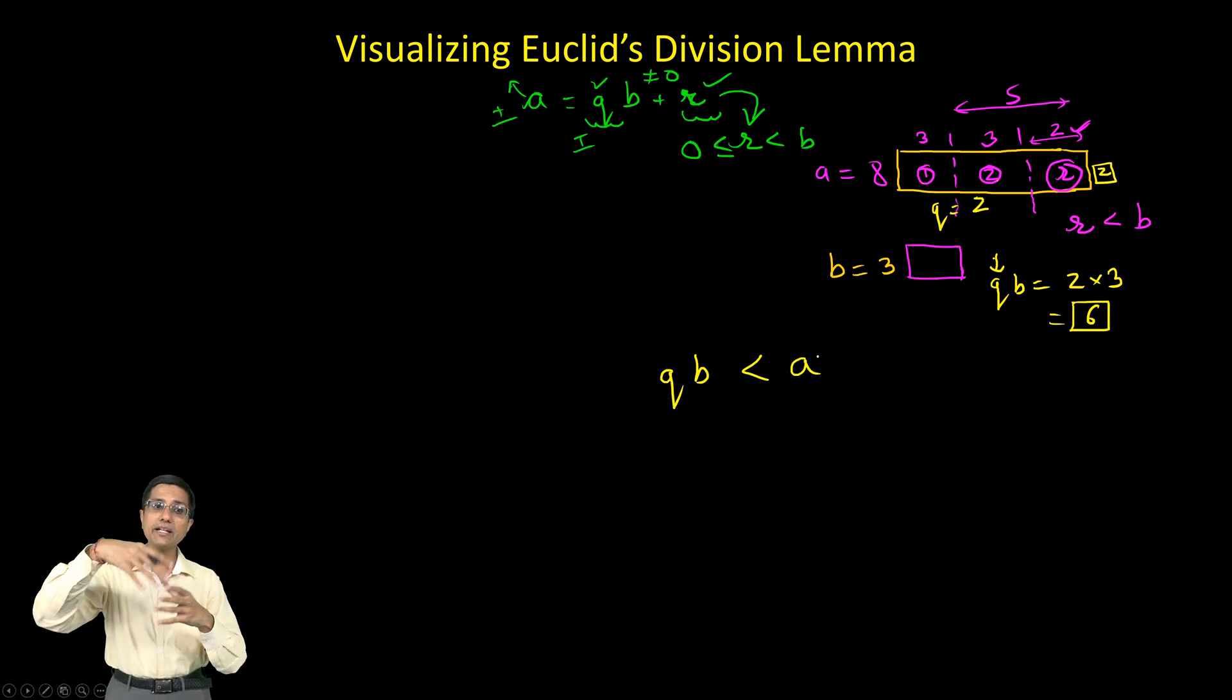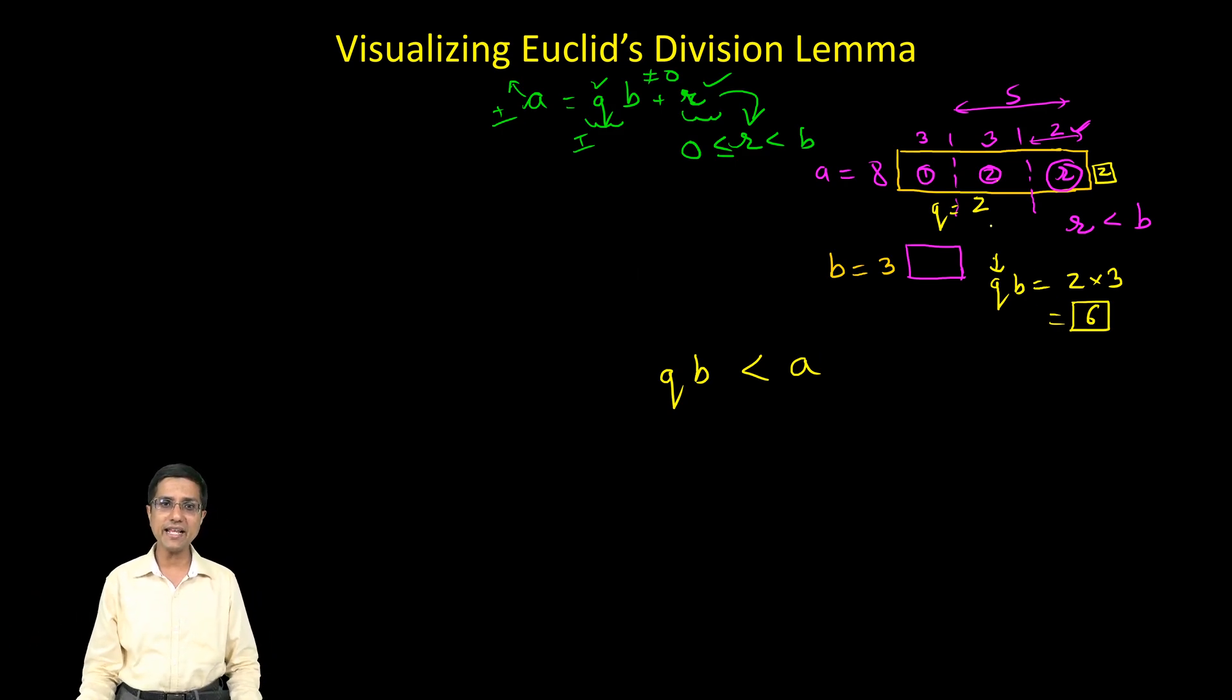So QB is increasing but we don't increase it so much that it becomes bigger than A. It has to be less than A. So here I take my Q, I start from 1, then I take it to 2 and then I stop because the next Q, if I did Q plus 1 into B, it would be 3 into 3 which is equal to 9. So that would of course be bigger than my A which is 8. So I don't do this, I stop right here. I take the largest possible value of QB which would be less than A.